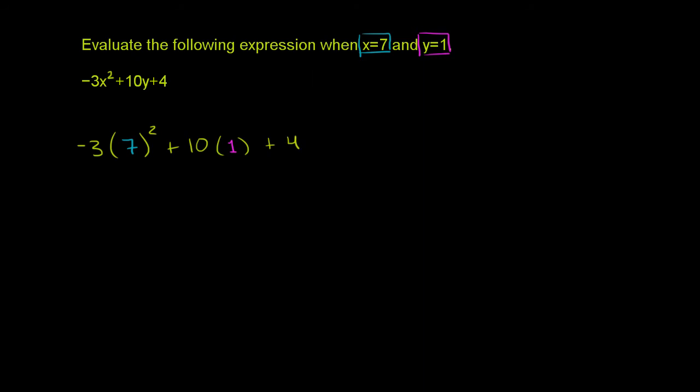So this is going to be equal to -3 times 7 squared. 7 squared is 49. Orders of operations, you do the exponent first.